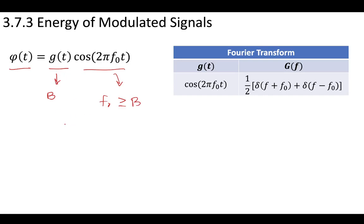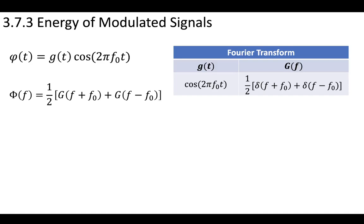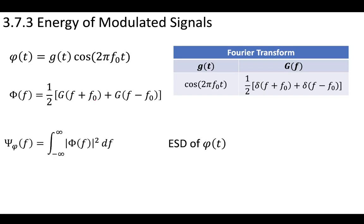This non-overlap condition is something we'll commonly see, and you'll see why in just a moment. When you take the Fourier transform of the modulated signal, because of the cosine, you're going to introduce a one-half term. So you'll have one-half multiplied by your original signal, which has been shifted to plus and minus f-naught in the frequency domain.